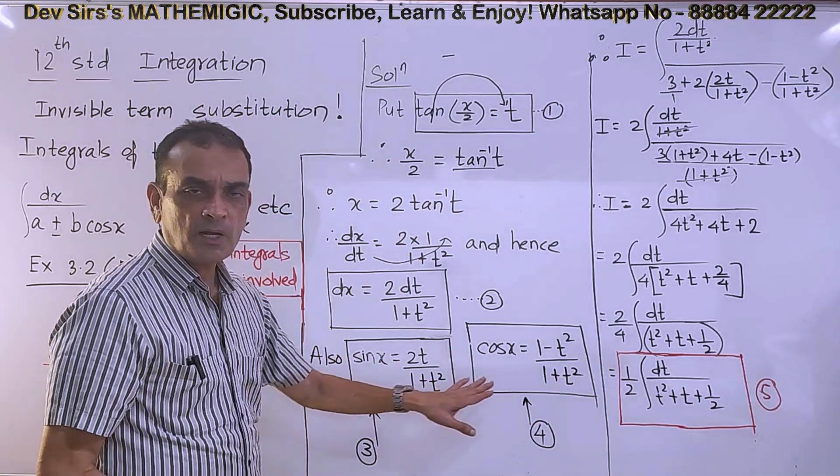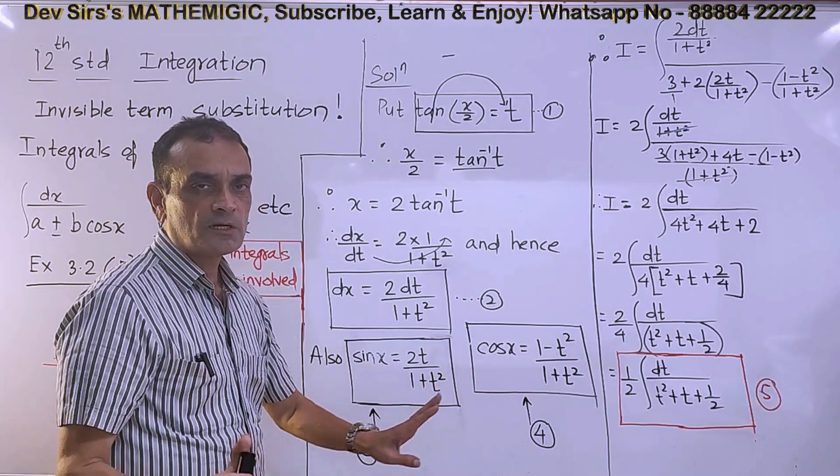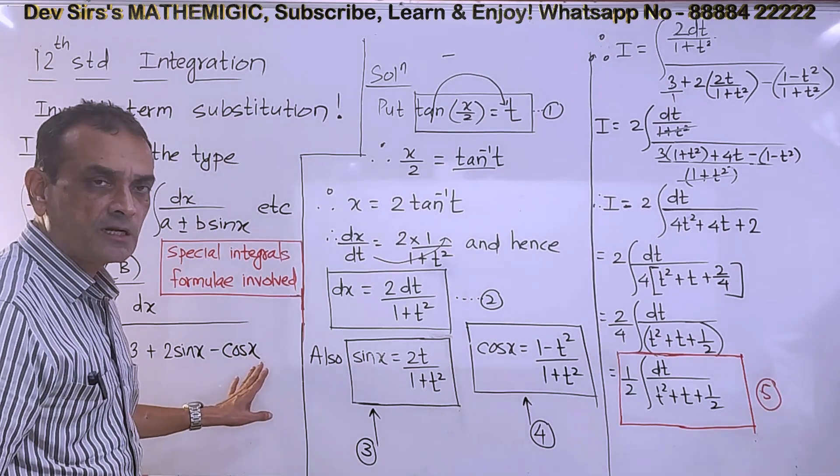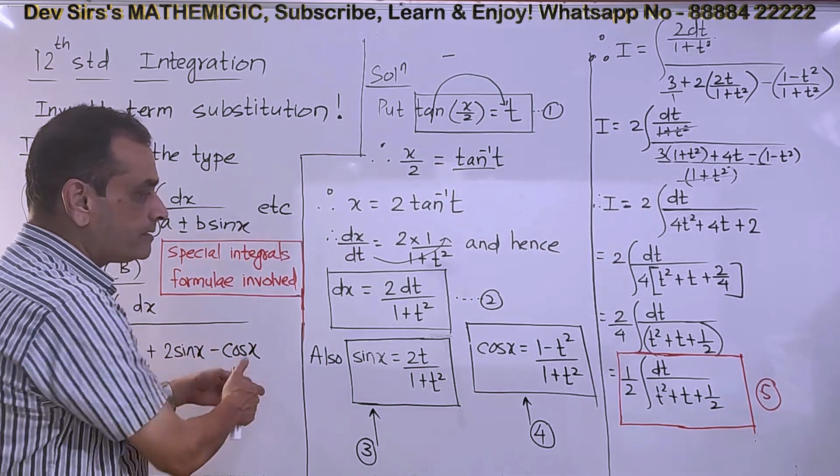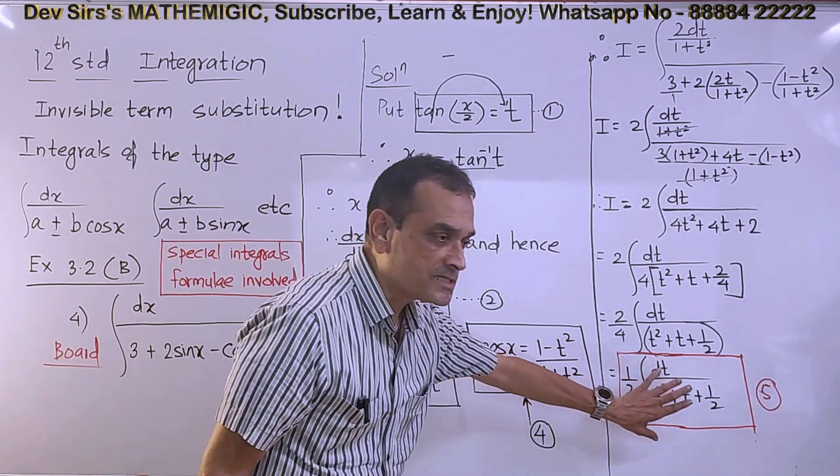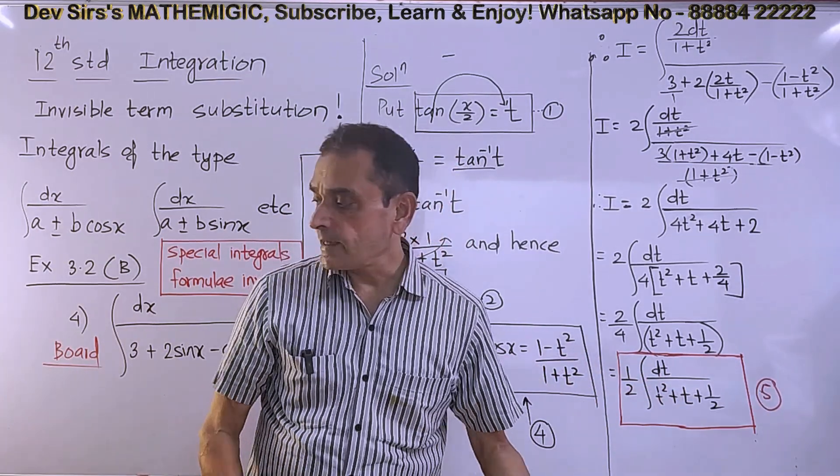So finally, after substitution, we get 1/2 times integral of dt/(t² + t + 1/2). This type of problem can appear. Do you understand invisible term substitution? Three substitutions you have to remember. In certain problems only sin x appears, in certain sums only cos x. Here both are present. The problem is not yet over.